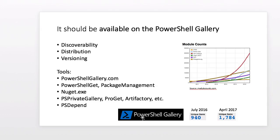Back in July 2016 I did a quick talk for our user group and there were about 940 unique items in the PowerShell Gallery. Today there's about 1,700 — that's a pretty big increase. But if you look at other languages, we have nowhere near the coverage. Consider writing modules and publishing to the gallery so we can get our numbers up and start taking dependencies on things instead of reinventing the wheel for everything.